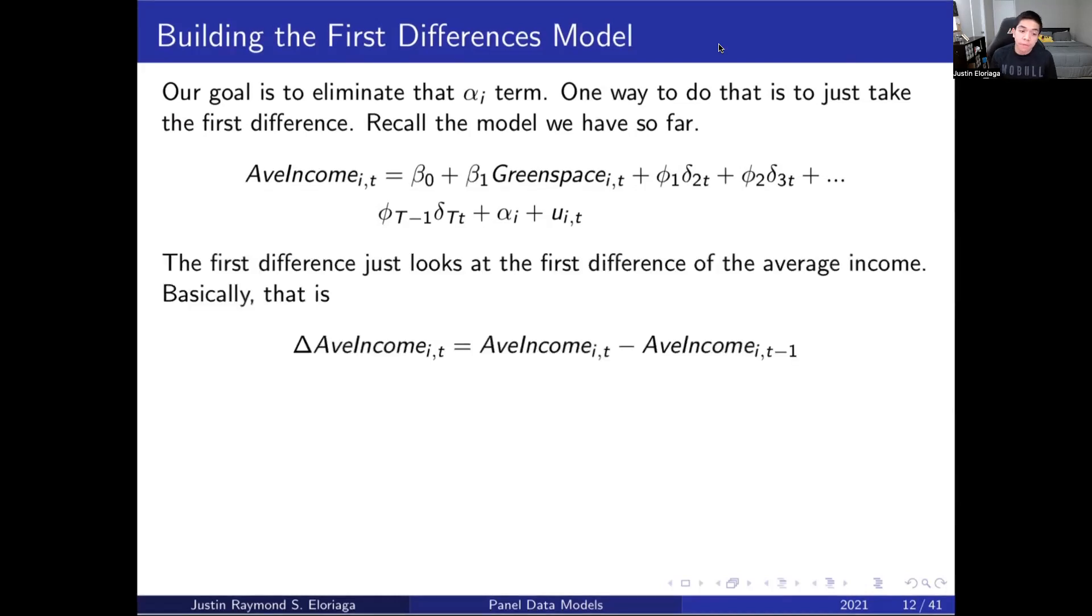The first difference simply looks like this. If you have average income at time t, you take its difference by subtracting whatever value that took in t minus 1. So we basically subtract those things together, and what we get is the first difference term or this delta average income at t.